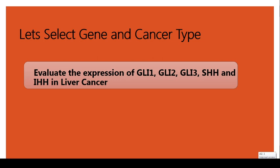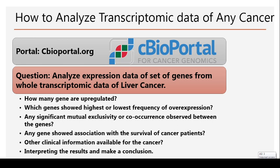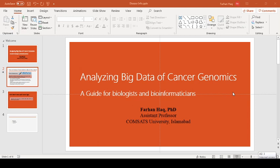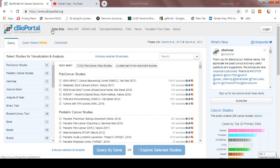So let us select a gene in a cancer type. The question is: evaluate the expression of Gli1, Gli2, Gli3, SHH, and IHH in liver cancer. First of all, if we want to evaluate the expression, we need to find a cancer type dataset — that is liver cancer — then download the expression information in a graphical or tabular format, and then perform the analysis to evaluate which gene showed overexpression, which showed the highest expression, and which showed the lowest frequency of expression. So let us go to cBioPortal.